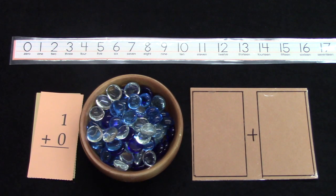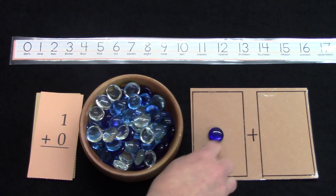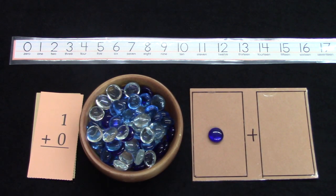Well what about one plus zero? On this one we're going to take one gem and put it on this side and no gems for that side. So one plus zero would be one.